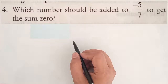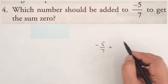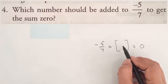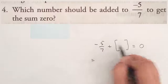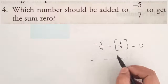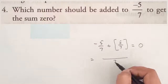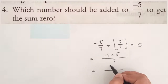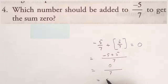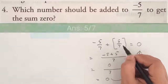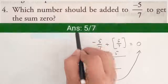Question 14: Which number should be added to minus 5 by 7 to get the sum 0? For the sum to be 0, we need to add the additive inverse. Minus 5 plus 5 equals 0 over 7. This 0 comes when we add plus 5 by 7. Therefore, the answer is plus 5 by 7.